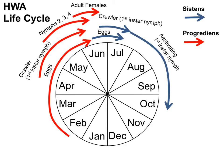When diapause is in the winter, it's called hibernation. Since this dormant state occurs in the summer, it's called estivation. These estivating first instar nymphs remain in this dormant diapause state throughout the summer and early fall. Many of these nymphs do not survive the summer.